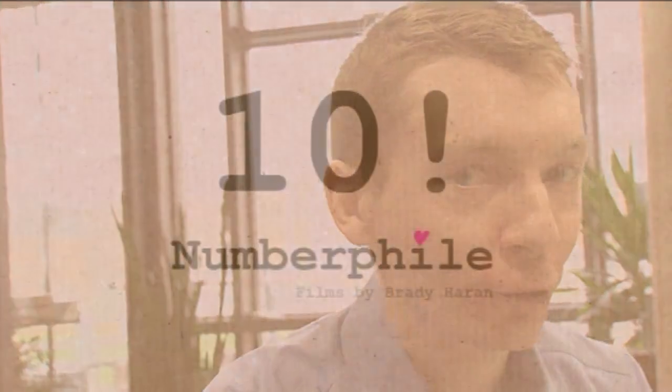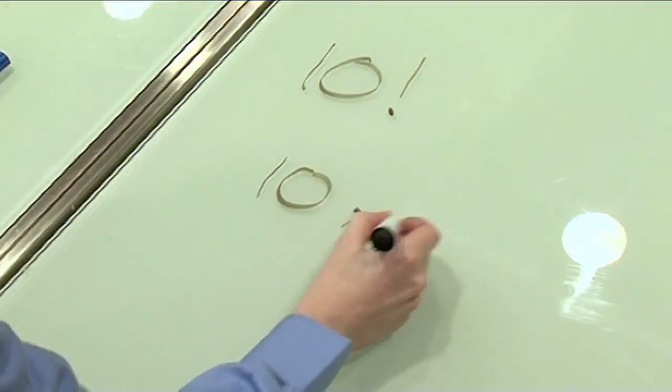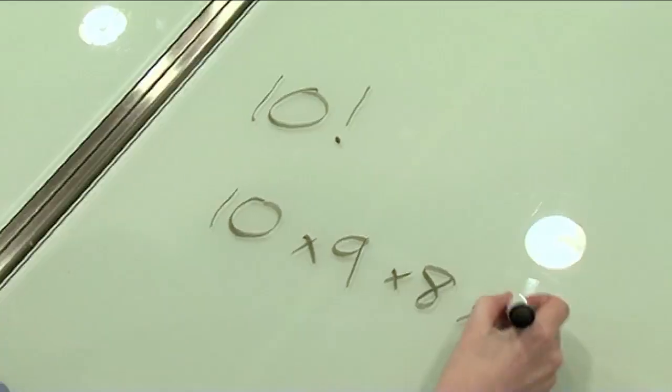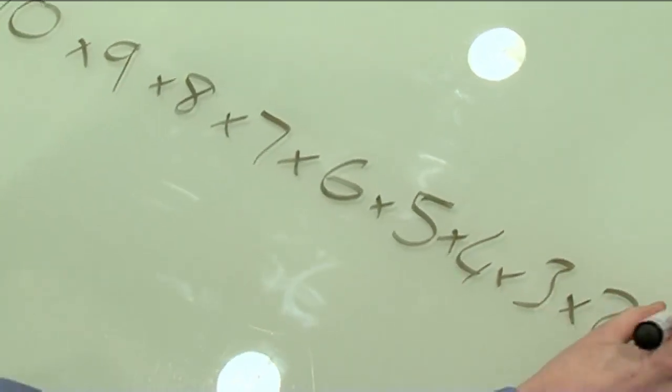OK, so today we've got a little mathematical nugget for you. I'm going to talk about 10 factorial. So 10 factorial is what you get when you multiply the numbers 10 times 9 times 8 times 7. I'm going to go all the way down, times 2 times 1.